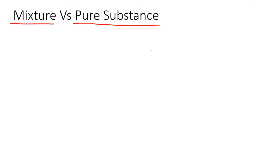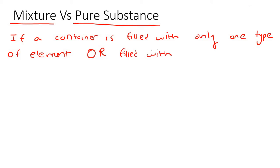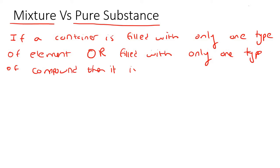The golden thing that you need to remember is the following: if a container is filled with only one type of element, or filled with only one type of compound, then it is a pure substance. If not, then it's a mixture.